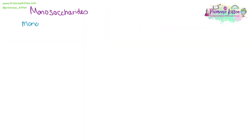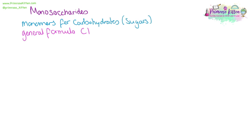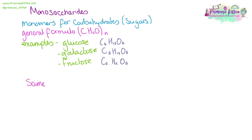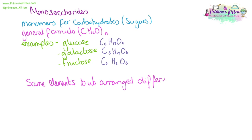Monosaccharides are single sugars — mono means one, saccharide means sugar — and these are the monomers for carbohydrates. They have the general formula CH₂O expanded in long chains. Examples include glucose, galactose, and fructose. All of these have the same formula with the same number of carbons, hydrogens, and oxygens in the same ratios, but their structures are different — they are arranged differently in space, which means they will behave differently.